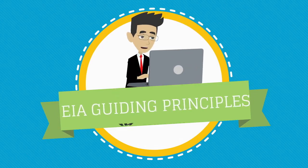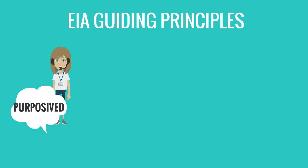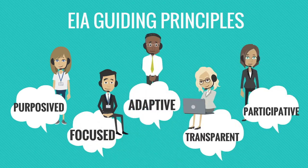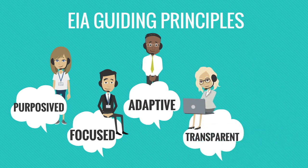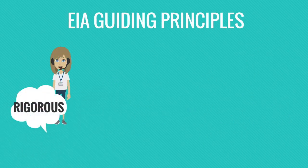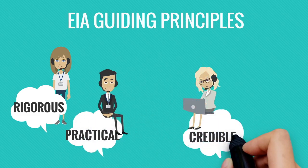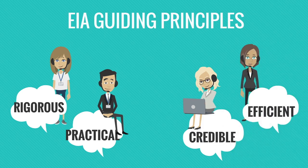Next, we are learning regarding EIA guiding principles. There are nine principles: Purpose — meeting its aims and objectives; Focused — concentrating on the effects that matter; Adaptive — responding to issues and realities; Transparent — clear and easily understood; Participative — fully involving the public; Rigorous — employing best practicable methodology; Practical — establishing mitigation measures that work; Credible — carried out with objectivity and professionalism; Efficient — imposing least cost burden on proponents.